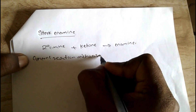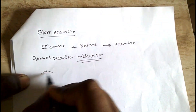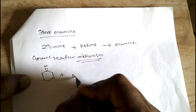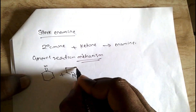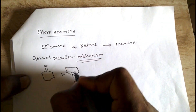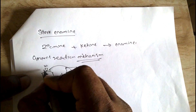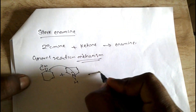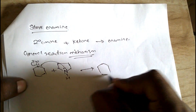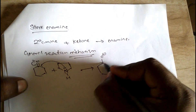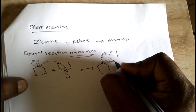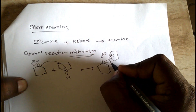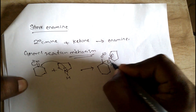We are taking a cyclic ketone with the secondary amine. The lone pair of the nitrogen will attack on the carbonyl, and the double bond will shift — one bond will shift towards oxygen. Oxygen gets a negative charge, and nitrogen becomes a positive charge.